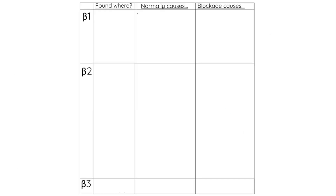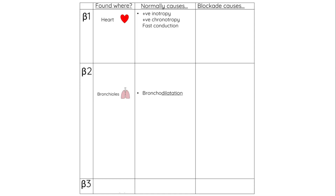The biggest challenge when learning about adrenergic receptors is learning the locations and the physiological effects of their activation. The two to remember for beta-receptors: beta-1 receptors are found in the heart, and they lead to increased contractility and increased heart rate. Beta-2 receptors are found in the airways of the lungs, where their activation leads to dilatation. So let's start with beta-1 receptors.